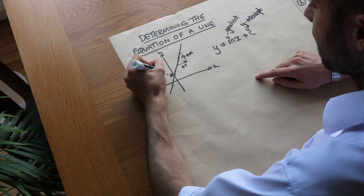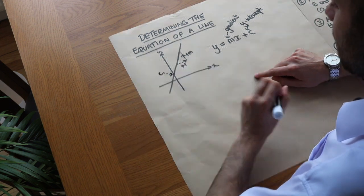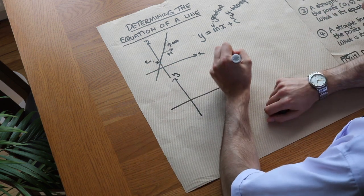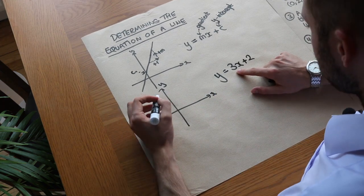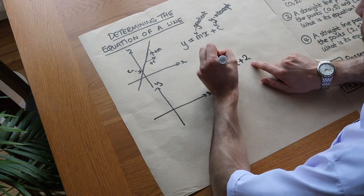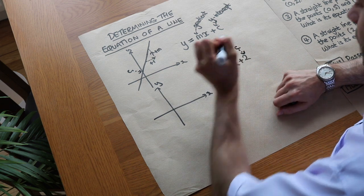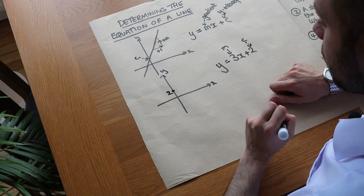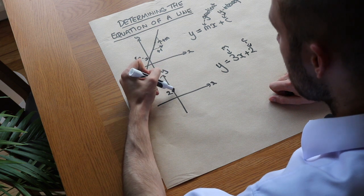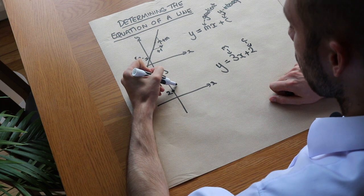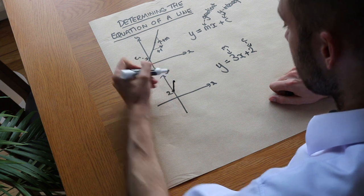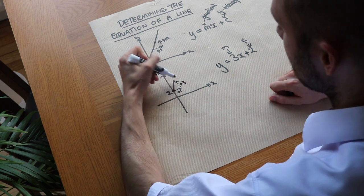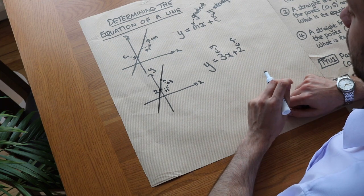So the y-intercept is that value c. For example, if I had y equals 3x plus 2, then the gradient is 3 and the y-intercept is 2. So if we put the y-intercept first at 2 on the y-axis, then each time you go across one unit you're going up three units — the y value is increasing by three.